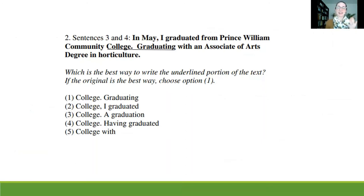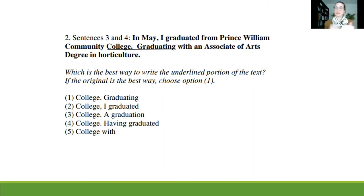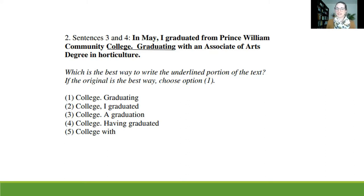All right, so we're going to take that text and look at individual pieces of it. It's good to have context of what you're looking for in the text as a whole. However, if you're short on time, a quicker way to move through would be to read the text first and then for any questions asked — like here, sentences three and four — maybe go back and read sentence two and sentence five as well for a bit more context. For today, we're looking at sentences three and four, which say: 'In May, I graduated from Prince William Community College, graduating with an associate's of arts degree in horticulture.' Which is the best way to write the underlined portion of the text? If the original is the best way, choose option one.